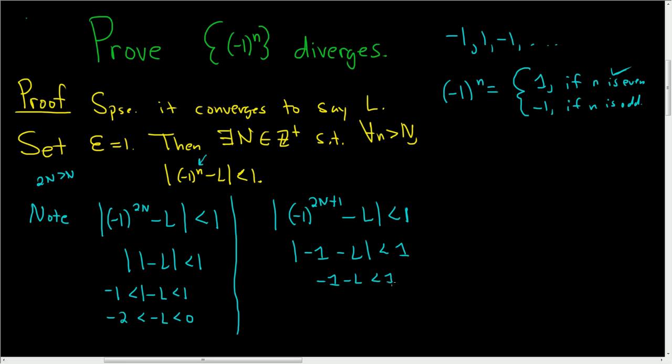So this is -1 - L, less than 1, greater than negative 1. If we add 1 to all the sides, we get 0 < -L < 2. Right, 1 plus 1 is 2. Okay, so we have two conditions.